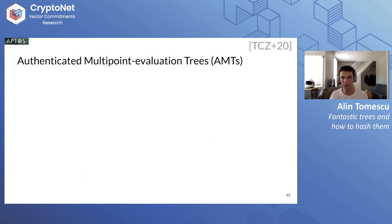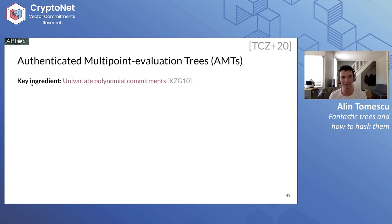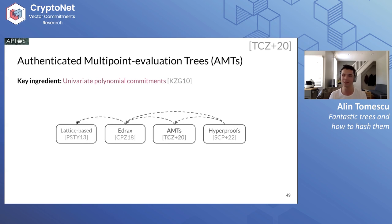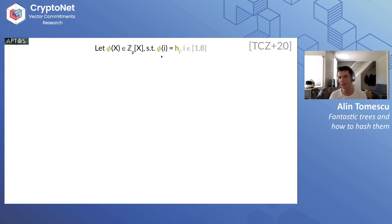I want to tell you about another construction that was kind of in between EDRAX and Hyperproofs, called an Authenticated Multipoint Evaluation Tree (AMT). This is work I did with my students a few years ago while I was a graduate student. The key ingredient here is a univariate polynomial commitment like KZG10 rather than a multivariate one. This work was done after EDRAX and inspired from it, and then Hyperproofs was inspired from both. The tree idea in Hyperproofs was really inspired from the AMT construction, just applied to the EDRAX setting.